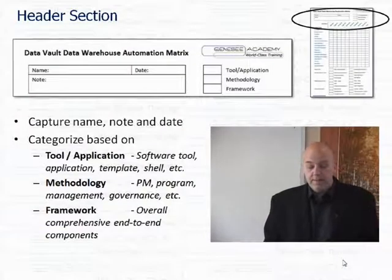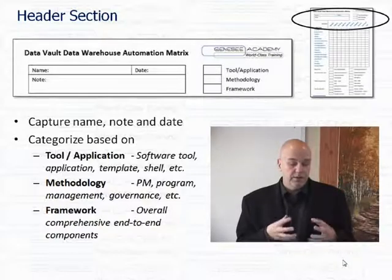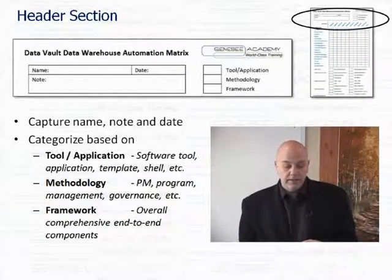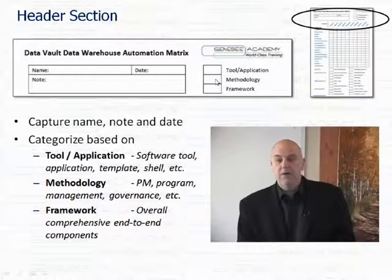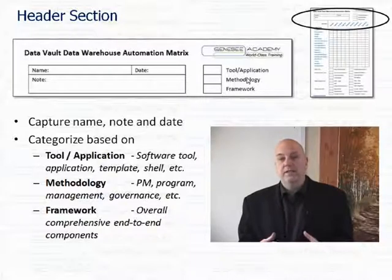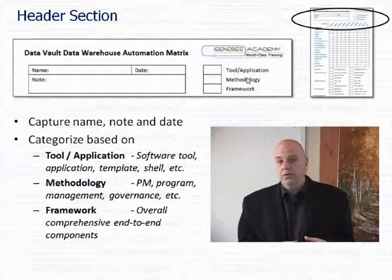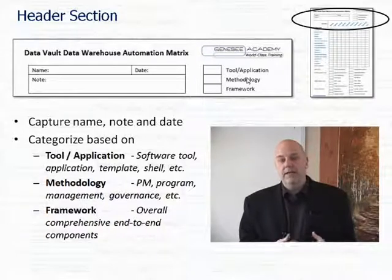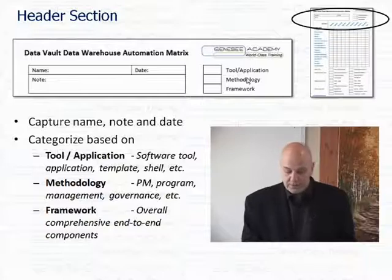This is the matrix itself. In the header section, we capture the name, some notes, and the date of what we're looking for, and then a general high-level category: is this a tool or application, some form of a methodology, or some kind of a framework? It could be a software tool, application, or even a template — it doesn't have to be an executable file. A methodology might be a project management approach, an approach to governance, or applications of agile techniques. A framework is an overall comprehensive end-to-end way of helping us understand how to proceed.